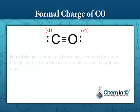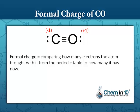So how is it that carbon can have a negative formal charge and oxygen can have a positive formal charge? Formal charge really is comparing how many electrons the atom brought with it from the periodic table to how many it has now.